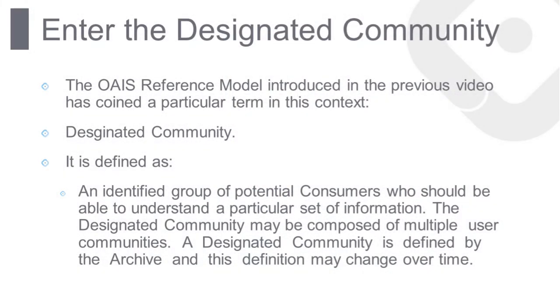The reference model for an open archival information system, introduced in the previous video, has coined a specific term in this context: the designated community. The designated community is defined as an identified group of potential consumers who should be able to understand a particular set of information. The designated community may be composed of multiple user communities. A designated community is defined by the archive, and this definition may change over time.